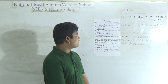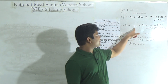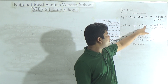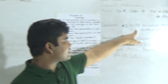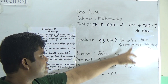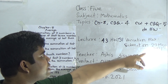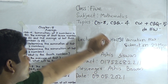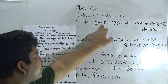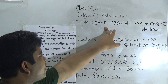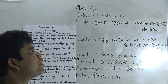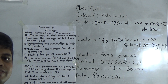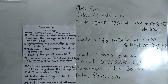Today is our lecture number 43 of half yearly, and today's SW number will be 31. This is your vacation SW and this vacation SW is to be submitted on 29 May 2021. Today's topic is chapter 8. From chapter 8, we shall solve CBQ number 4 as your class work and CBQ number 5 will be your SW. I hope you have understood. Dear student, let us start our class.